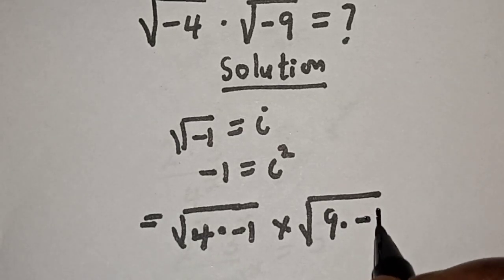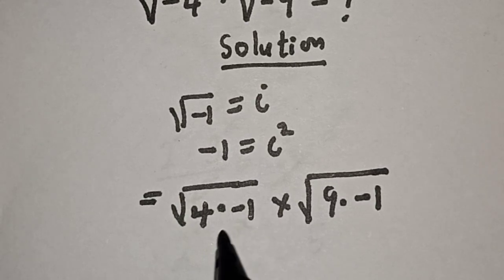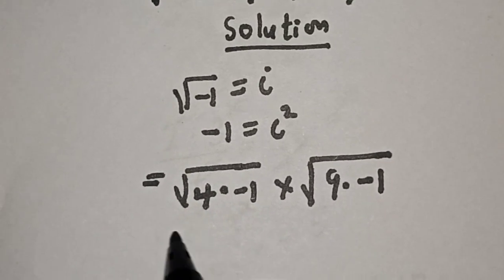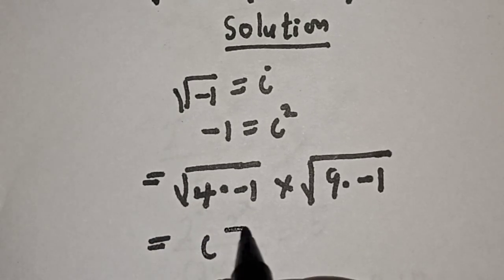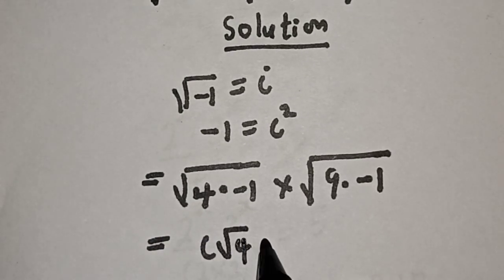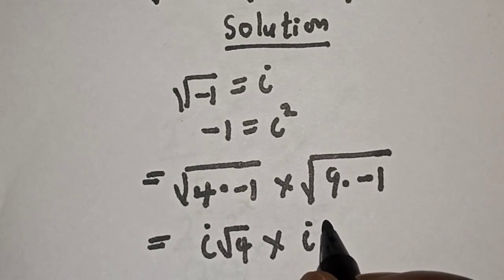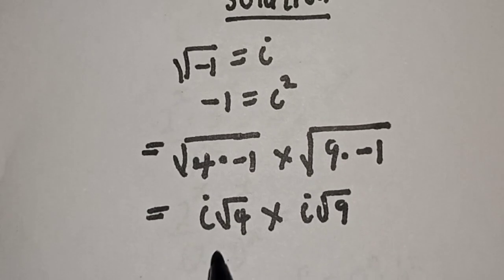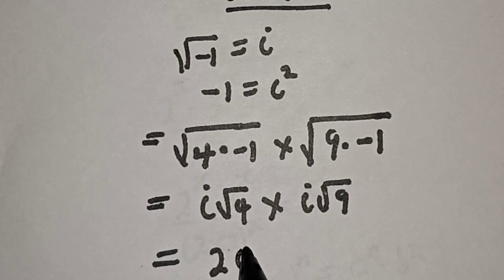We know that square root of minus one is i. So this becomes square root of four multiplied by i, times square root of nine. Square root of four is two, so this is equal to two i.